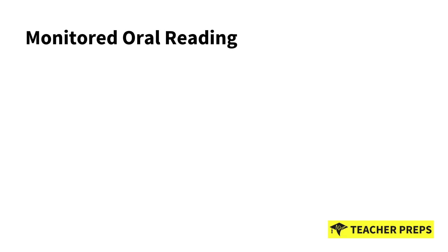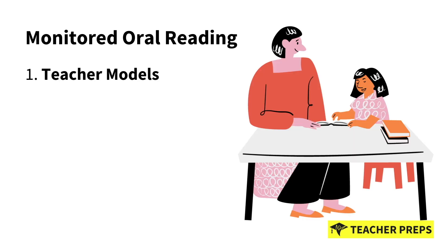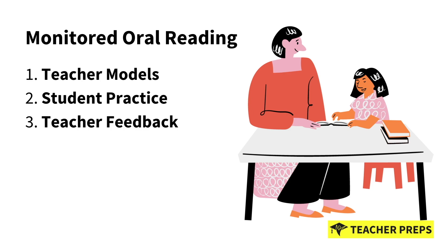The first strategy is called monitored oral reading, and it has a three-step process. Step one: the teacher models to the child how to read fluently and effectively. Step two: the student practices — we encourage students to re-read aloud the same text that was just read to them. Step three: the teacher provides tailored feedback, such as modeling accurate reading or noting pronunciation marks, to help improve the student's reading development.